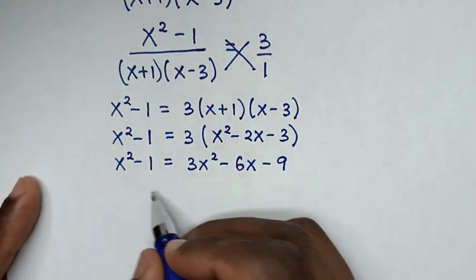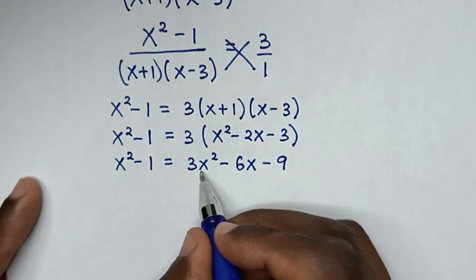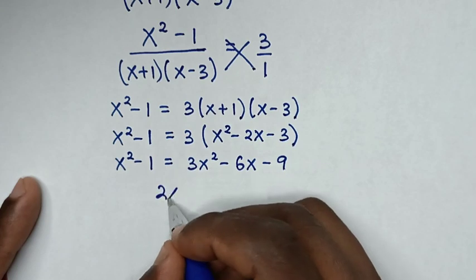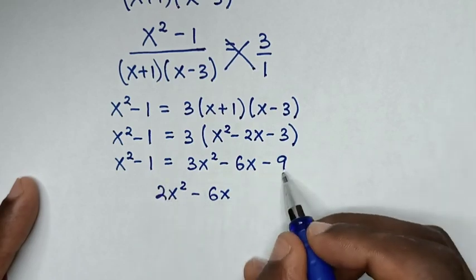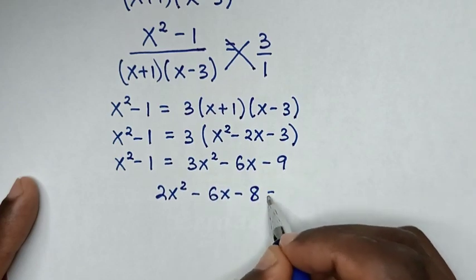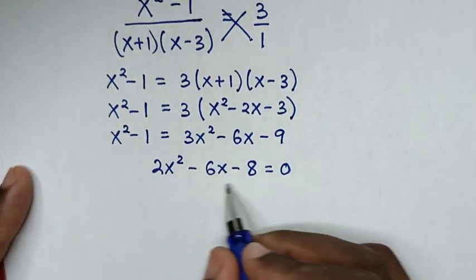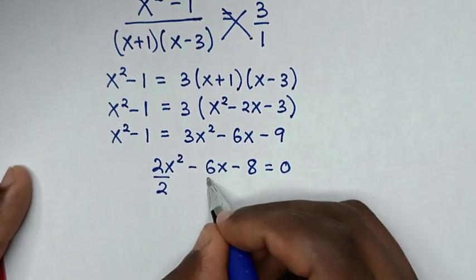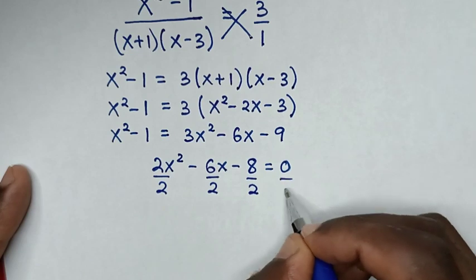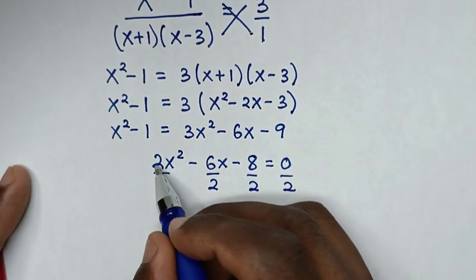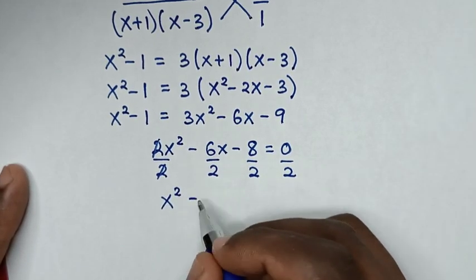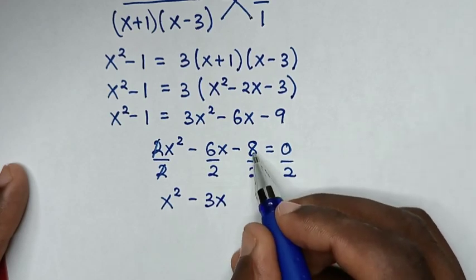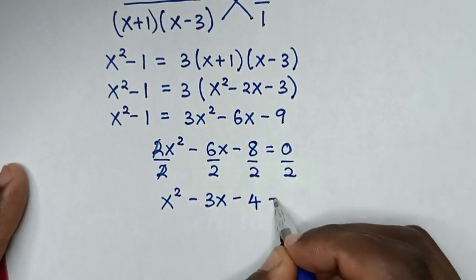Taking x squared to the right side: 3x squared minus x squared is 2x squared. We also take negative 1 to the right side: negative 9 plus 1 is negative 8. So our equation is 2x squared minus 6x minus 8 equals 0. This is divisible by 2, so dividing both sides by 2 gives x squared minus 3x minus 4 equals 0.